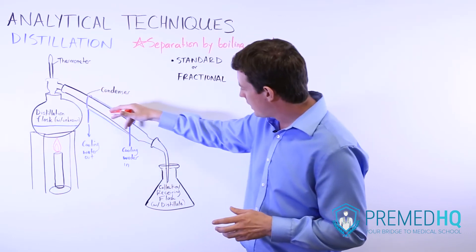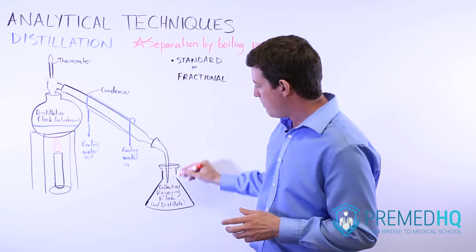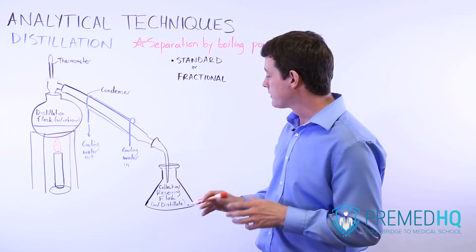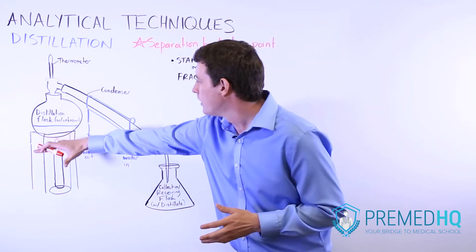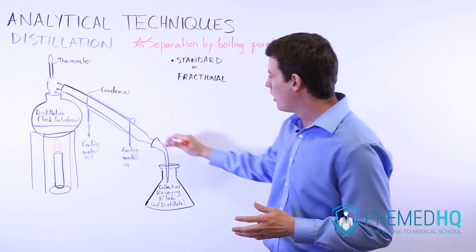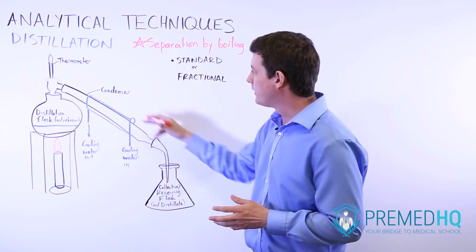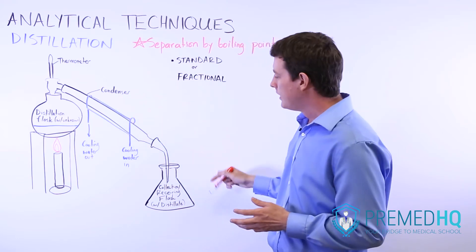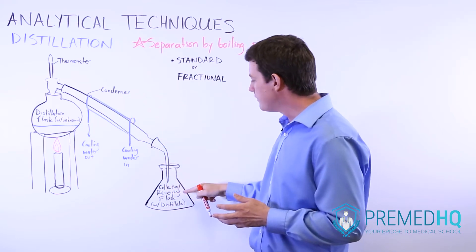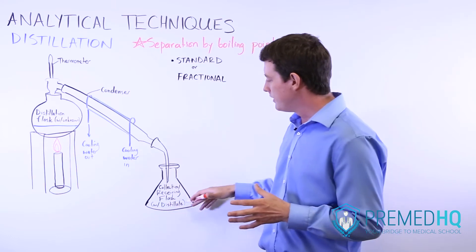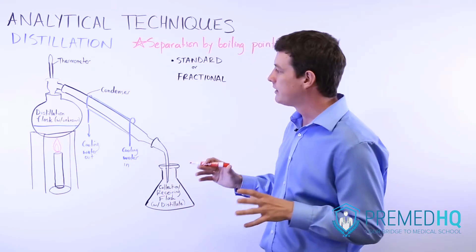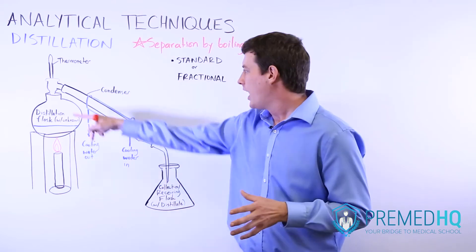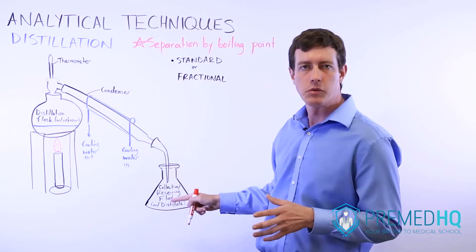As it moves down it will eventually move into a collection flask or receiving flask where you collect the things that have already boiled and are now re-entering the liquid phase. The collection flask contains the distillate, which is essentially the thing that has been distilled and has re-entered the liquid phase.